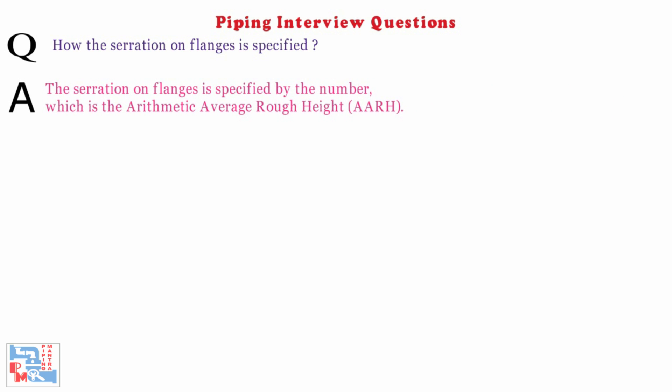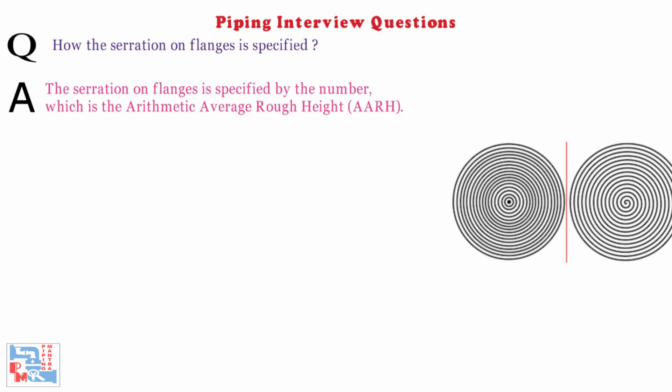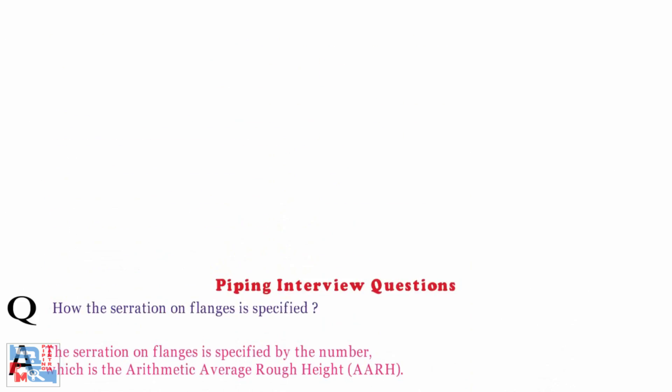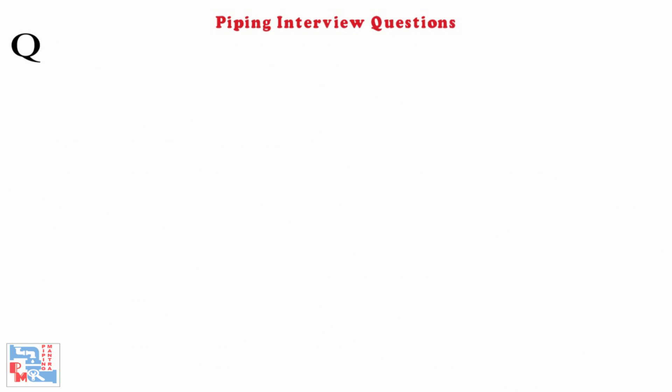Next: how is the serration on flanges specified? The serration of flanges is specified by a number which is the arithmetic average roughness height, AARH.